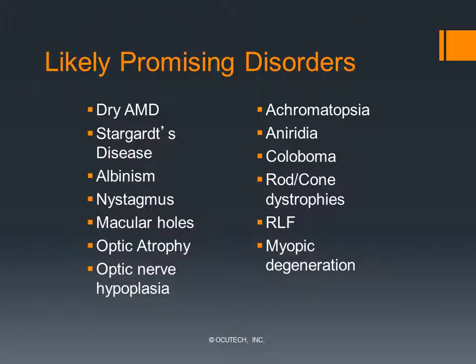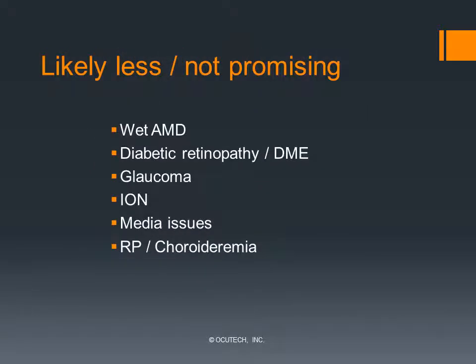Individuals with well-circumscribed macular defects, or those with central vision loss from genetic and developmental disorders, usually respond quite well to bioptic telescopes. Individuals with Stargardt's disease, albinism, nystagmus, achromatopsia, and rod-cone dystrophies are especially successful. Individuals with visual disorders that markedly reduce contrast or that constrict the visual field usually do not respond to telescopic low vision aids.